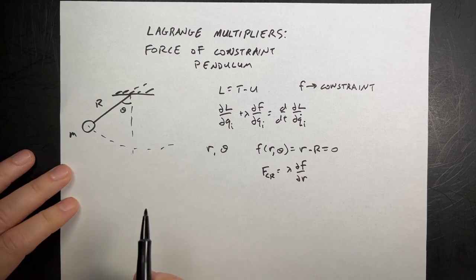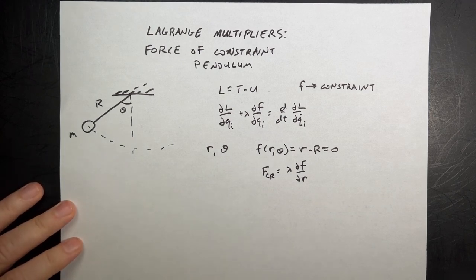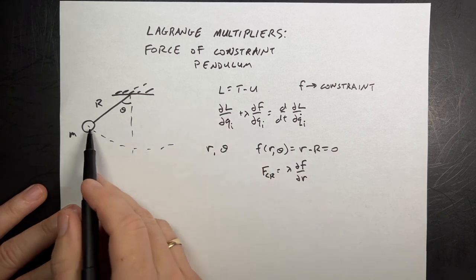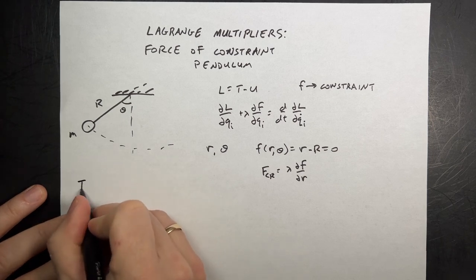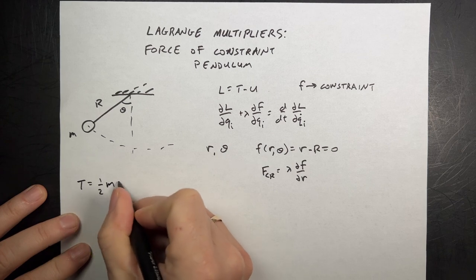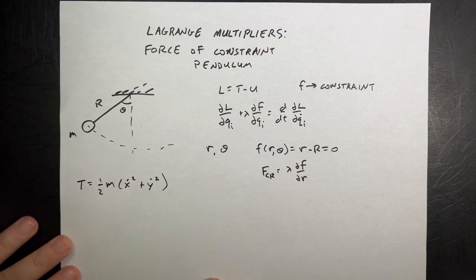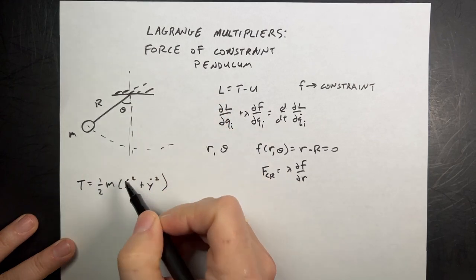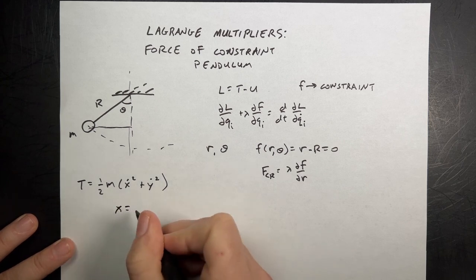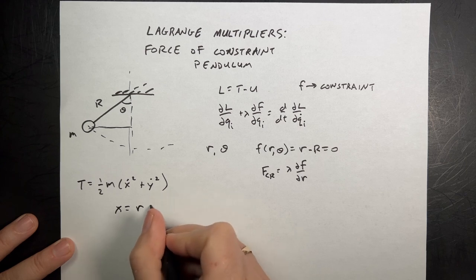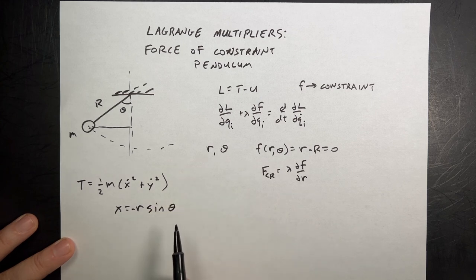You could write the kinetic energy by inspection in polar coordinates, but let's redo it properly. How do I find the kinetic energy in terms of lowercase r and theta? I can write the kinetic energy in terms of Cartesian coordinates — half m times (ẋ² + ẏ²) — then write x and y in terms of r and theta. So x = r sin(theta) and y = −r cos(theta) for the pendulum geometry.